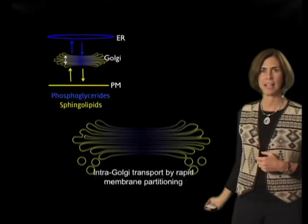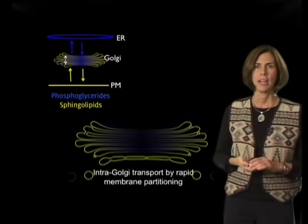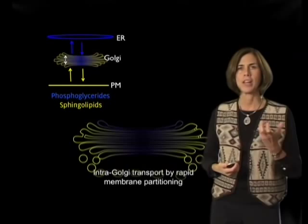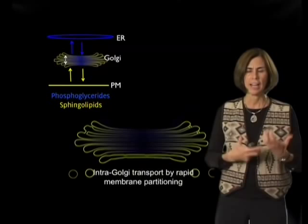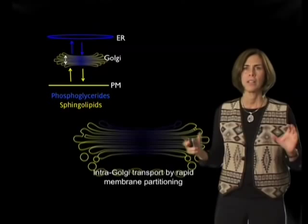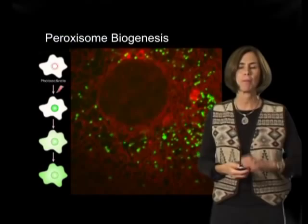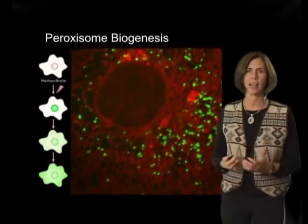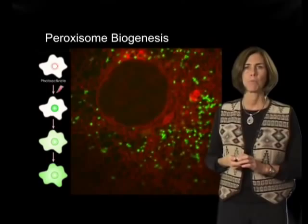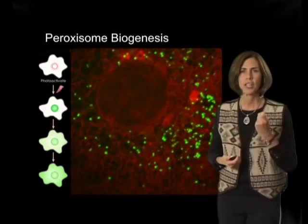This is a speculative model at this point and deserves much greater investigation, but it illustrates well how using these new tools of photoactivation and imaging can provide potentially new information about the way organelles like the Golgi apparatus are operating during secretory trafficking. Now I want to give one other example of how photoactivation can be used to get new insights into the dynamics of organelles — and in this example, we're going to be looking at peroxisome biogenesis.